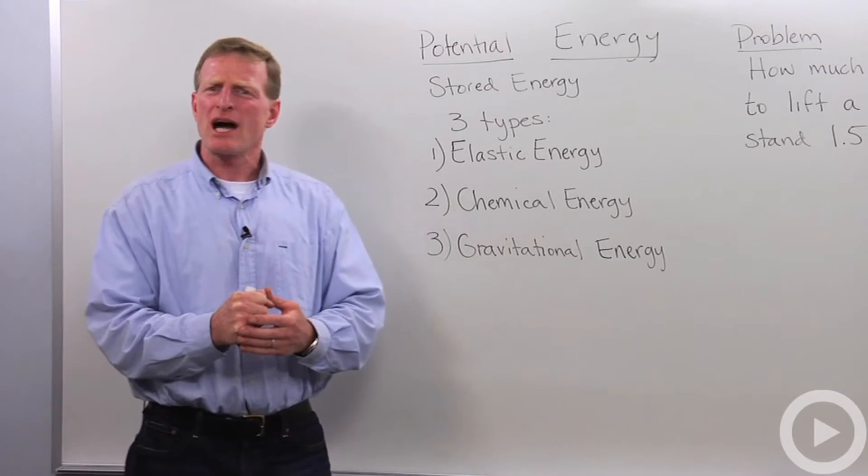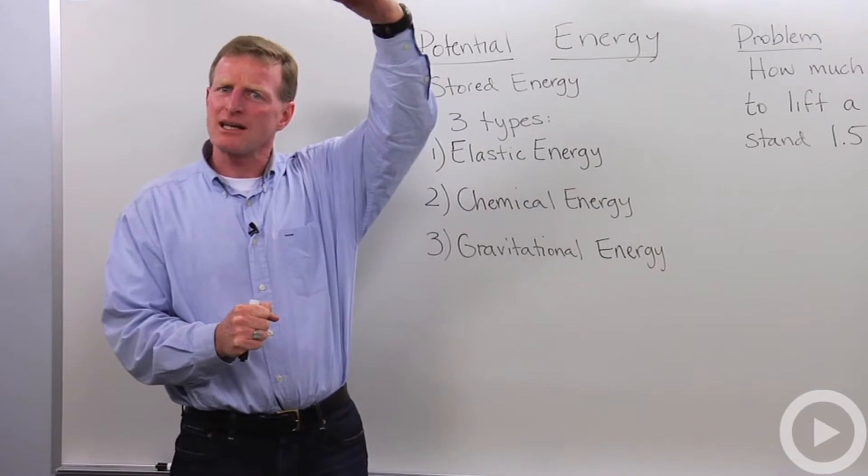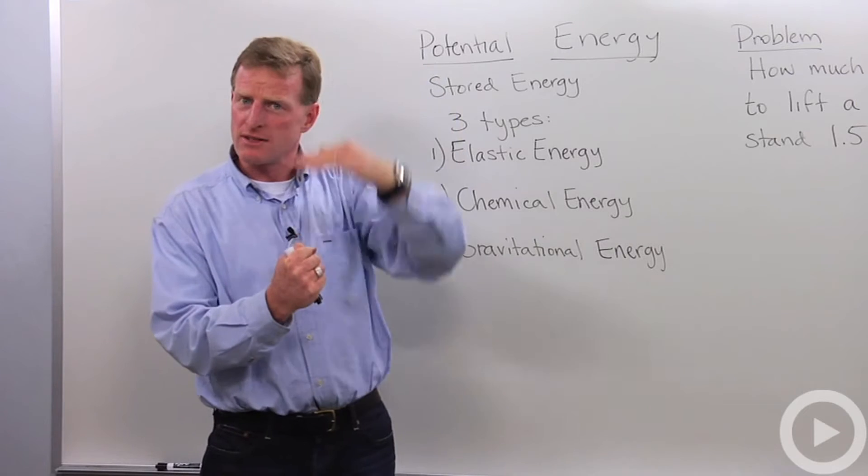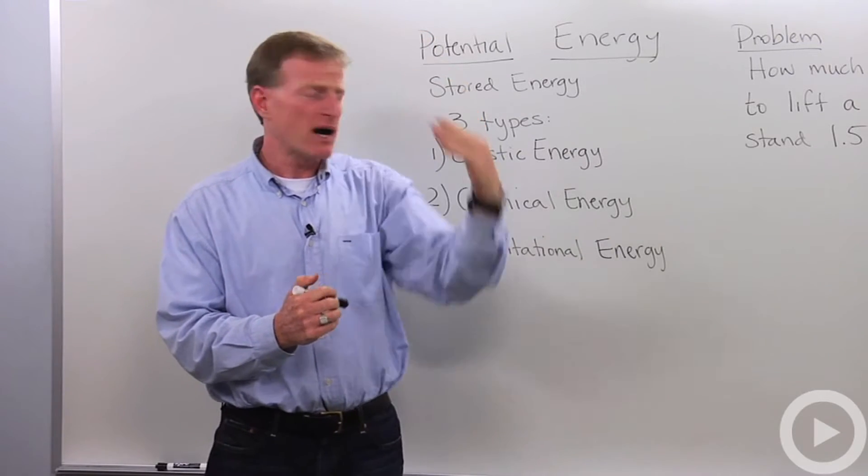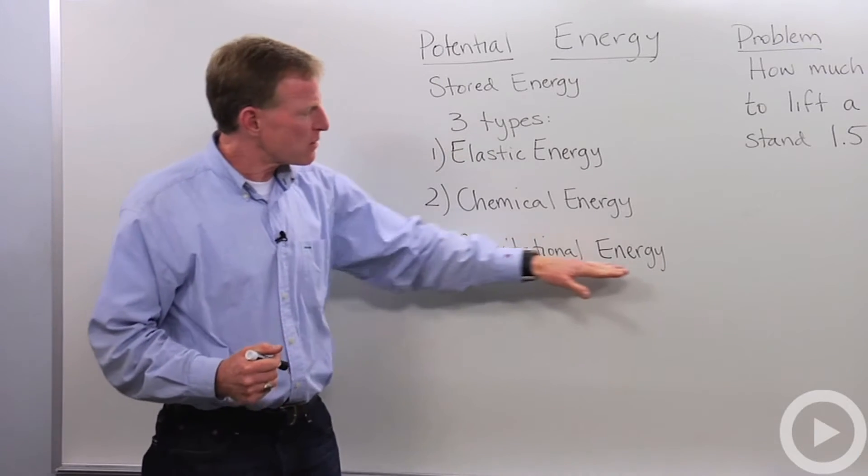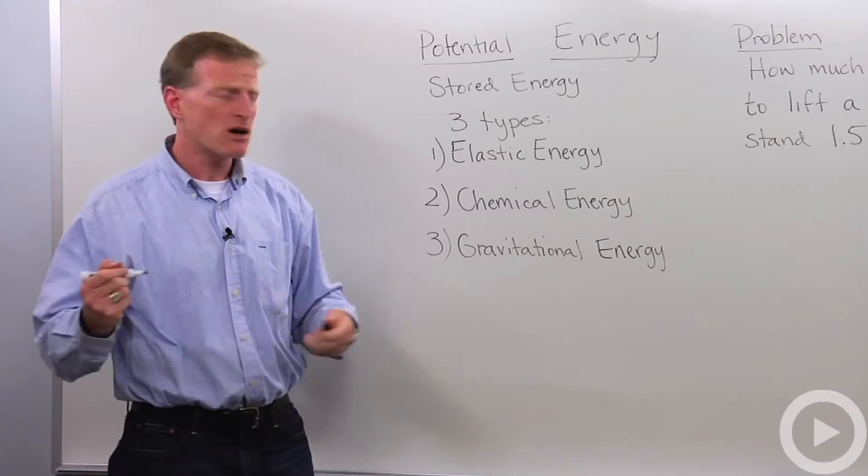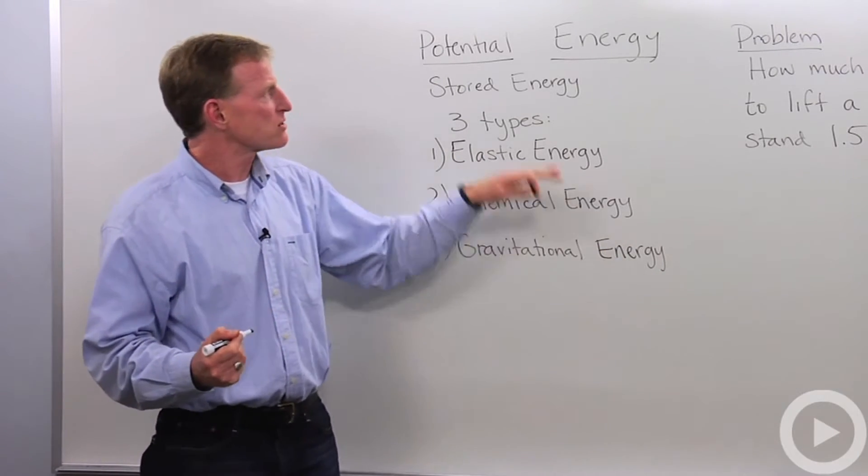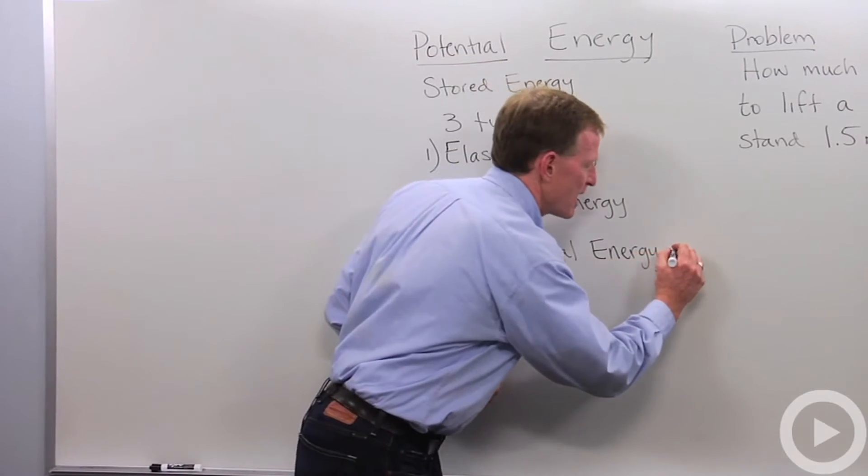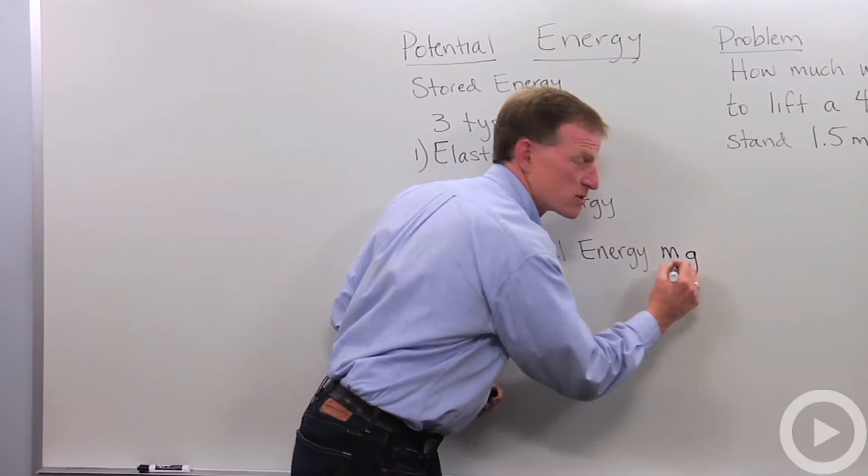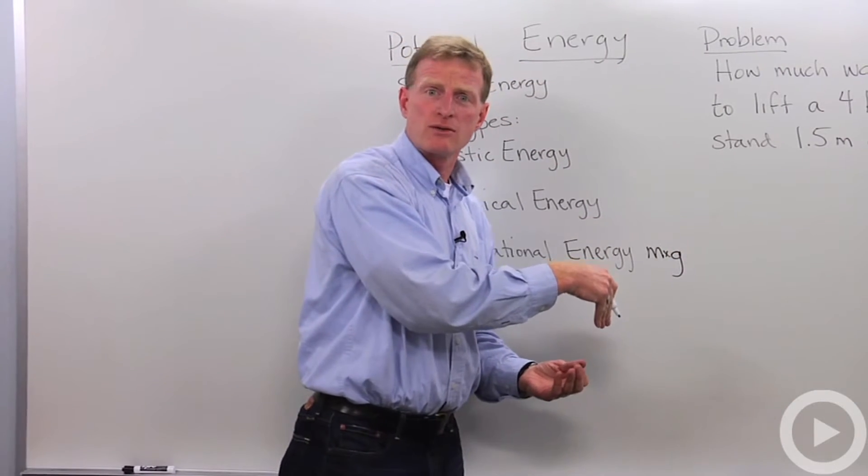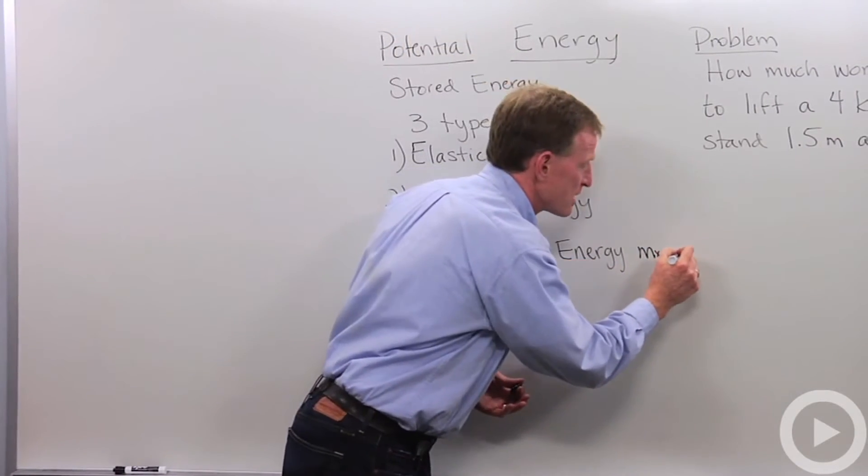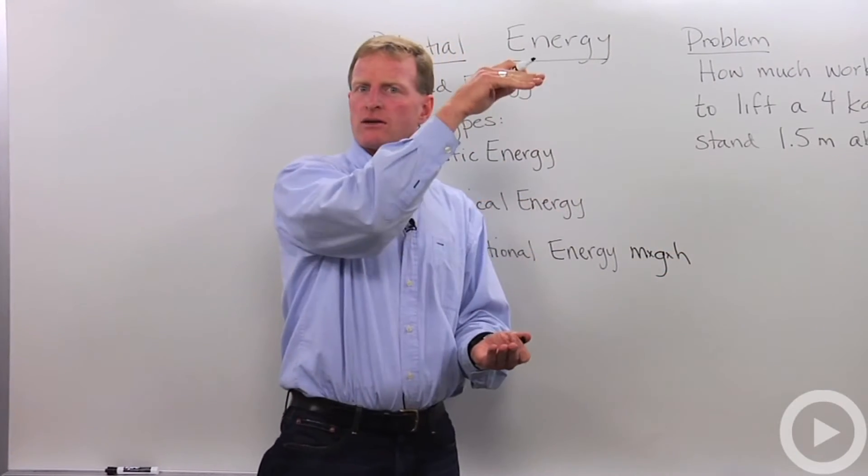Another type of energy is gravitational energy. So an object at a high position with a gravitational force on it has stored energy as well. And a formula - this is a quite common one we use in physics to solve - the formula for gravitational energy, or that stored energy, is the mass of an object times the gravitational force, which again is 9.8 meters per second squared, times the height of that object.